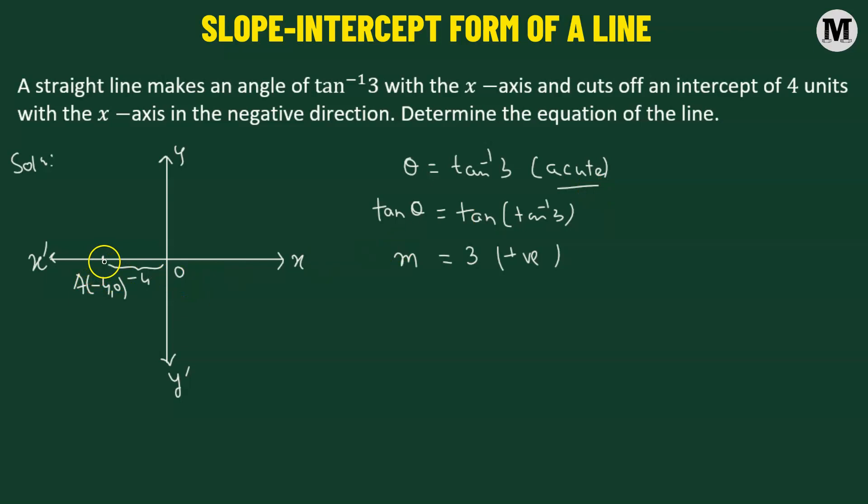So that means the line is going to be an acute angle. The angle that the line makes with the x-axis is going to be an acute angle, which means that our line is going to look something like this.